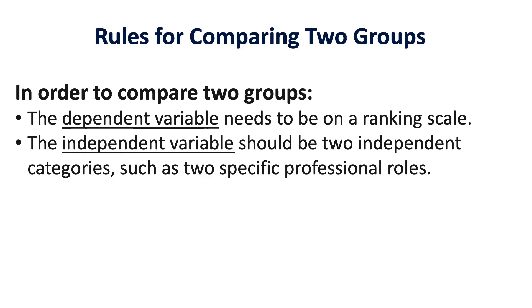Ground rules for comparing two groups: in order to compare two groups, we need a dependent variable on the ranking scale — a Likert scale — that we're comparing between the two groups. Our independent variable is our categorical role — the two professional roles we're comparing against each other.